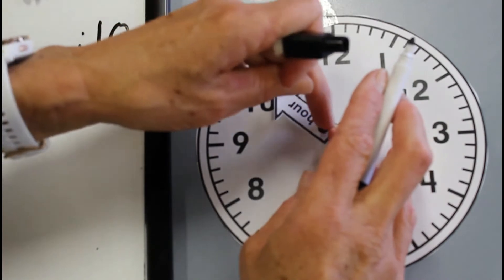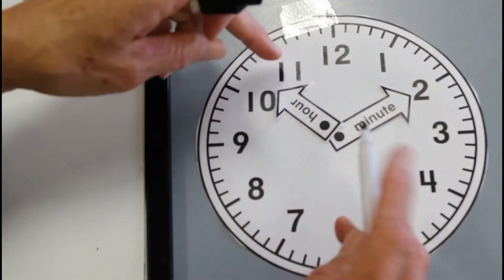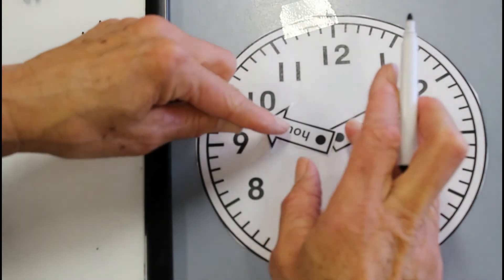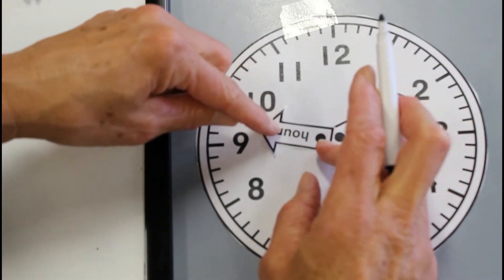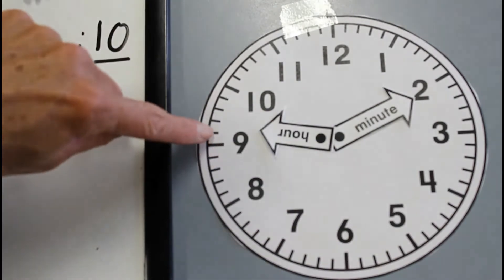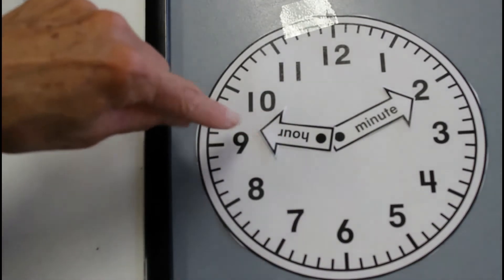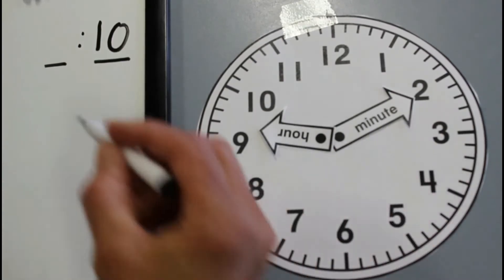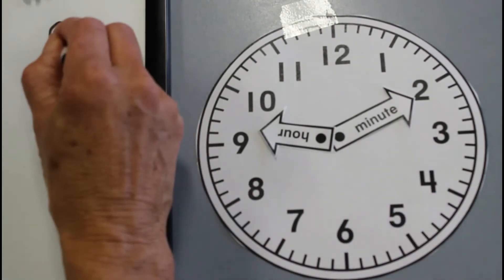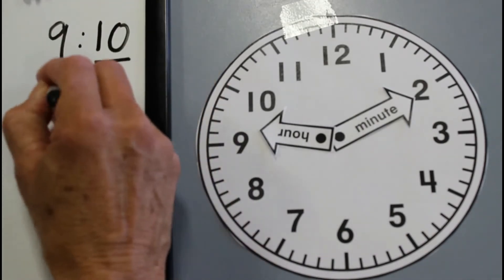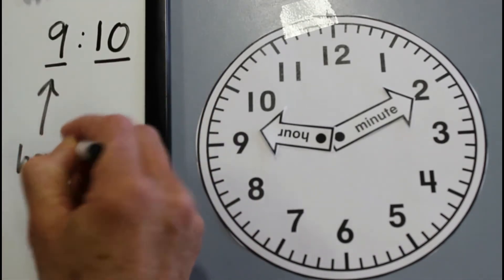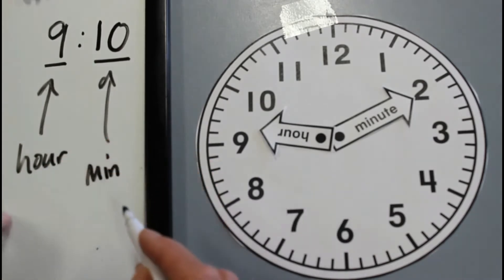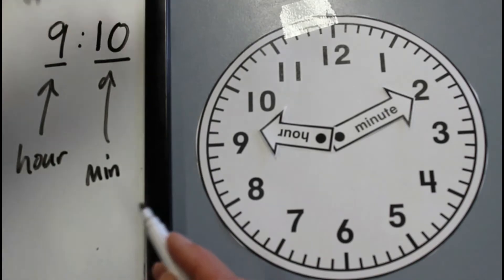That is ten minutes past ten. I might change that because it's going to be a bit confusing. I'm actually going to do ten minutes past nine. So the hour hand has only just gone past the ten. But that's ten minutes past nine. So we're going to write the nine there. The hour hand goes in this place. This is the hour and this is the minute. This is the hour time and minute time.